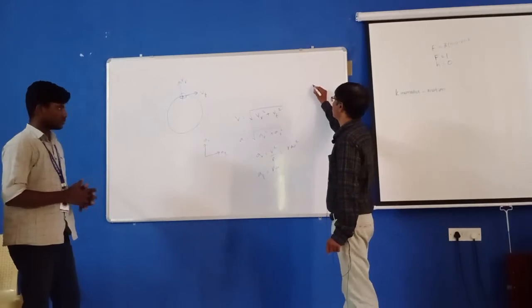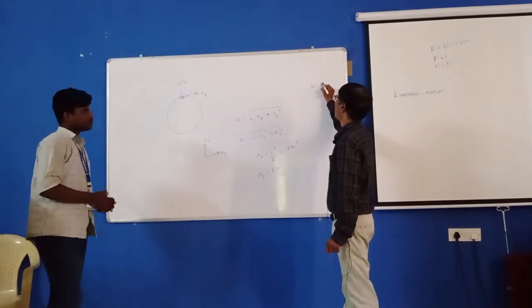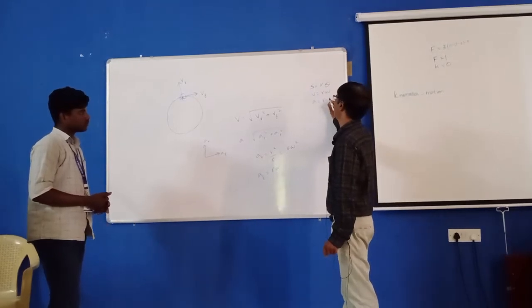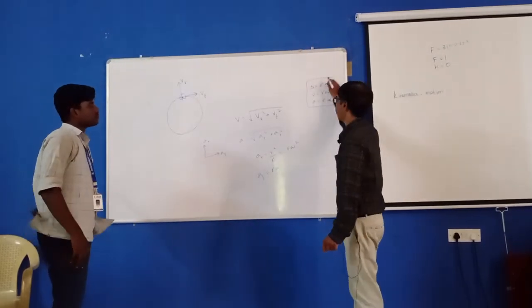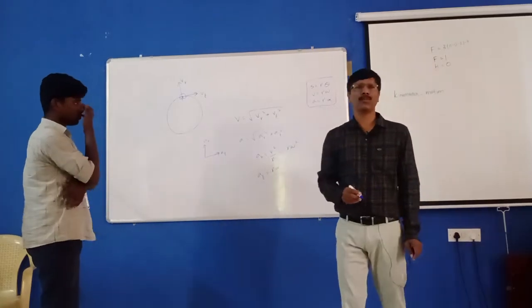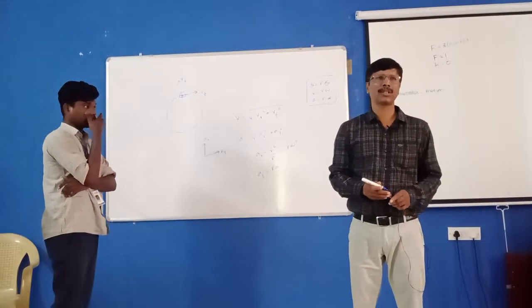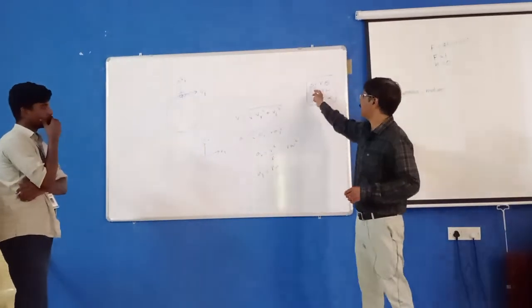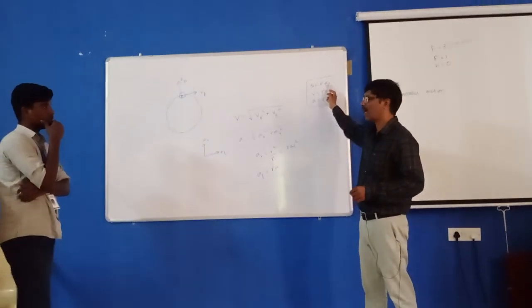So we should know that S equals R theta, V equals R omega, A equals R alpha. This is the relation between linear motion and angular motion. When we relate the linear motion and angular motion displacement, S equals R theta.